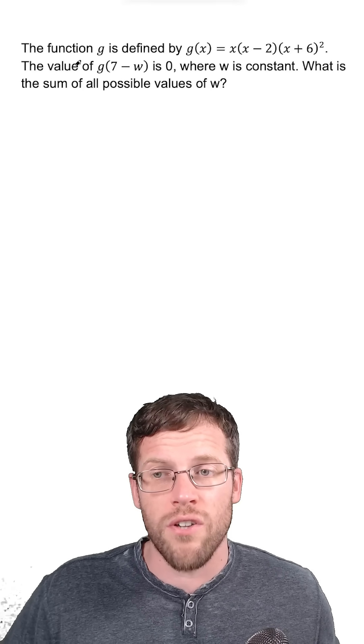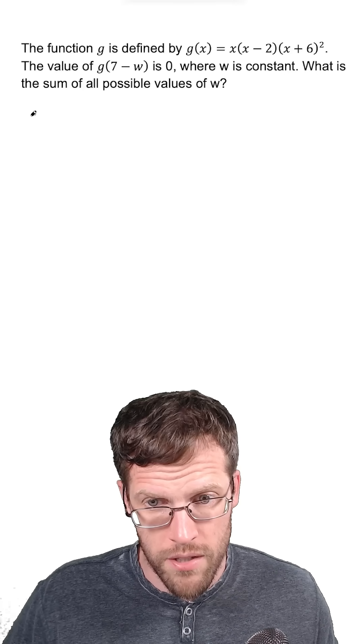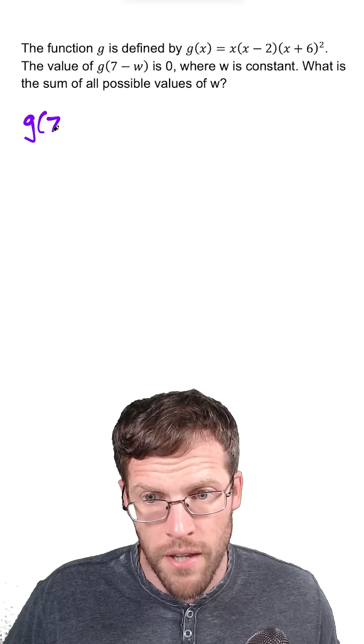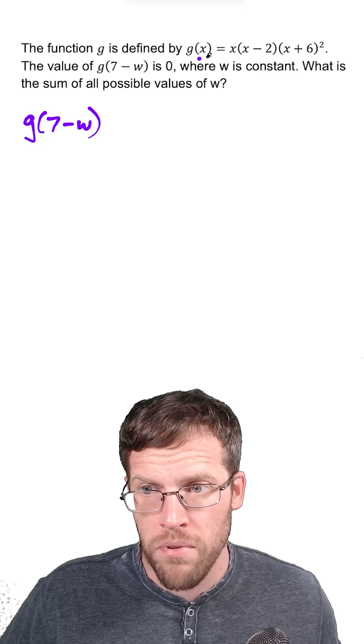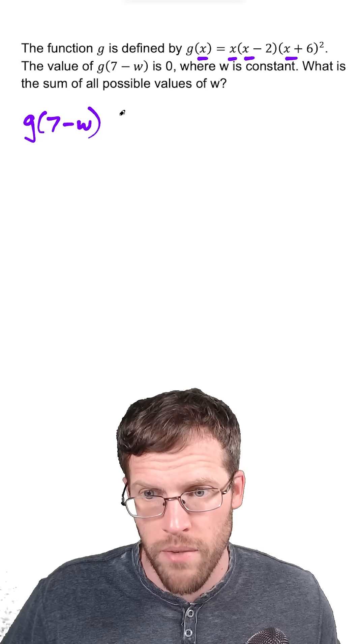For this SAT function question, we could start here by plugging in 7 minus W for X. So we're going to have g of 7 minus W, and we're going to replace all of these X's here with 7 minus W.